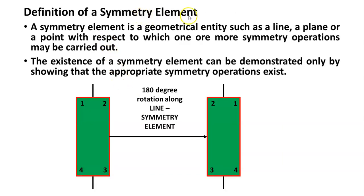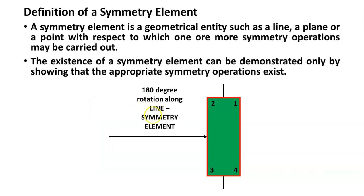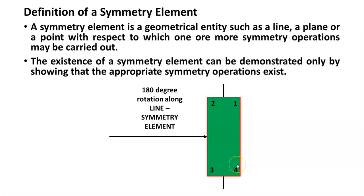The next concept is a symmetry element. A symmetry element is a geometrical identity about which the operation has been carried out. For example, if I rotate this rectangle about a line or axis using a 180-degree rotation, you can see that the 180-degree rotation results in an equivalent configuration. This operation is called rotation, whereas this line is called a symmetry element — the geometrical identity about which the flipping is being done.